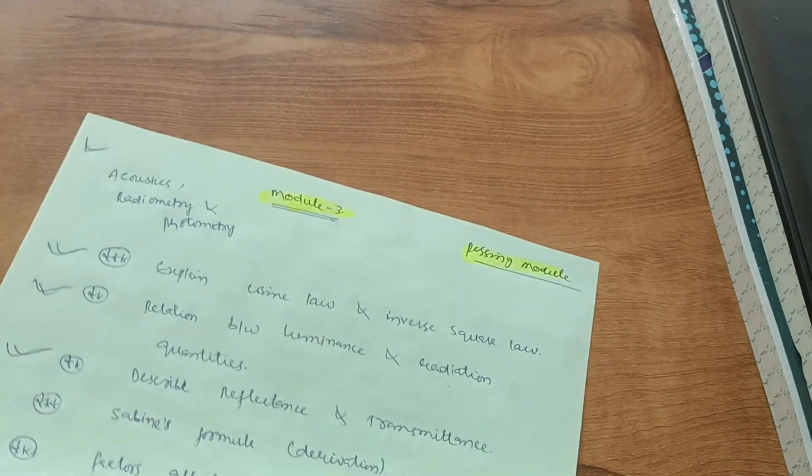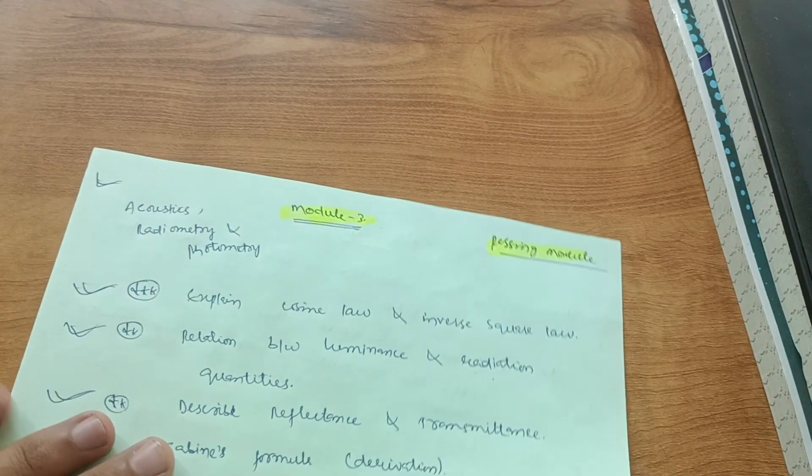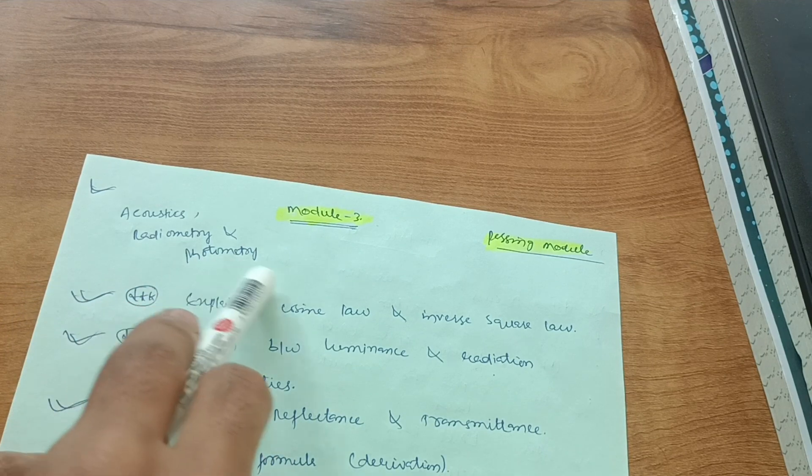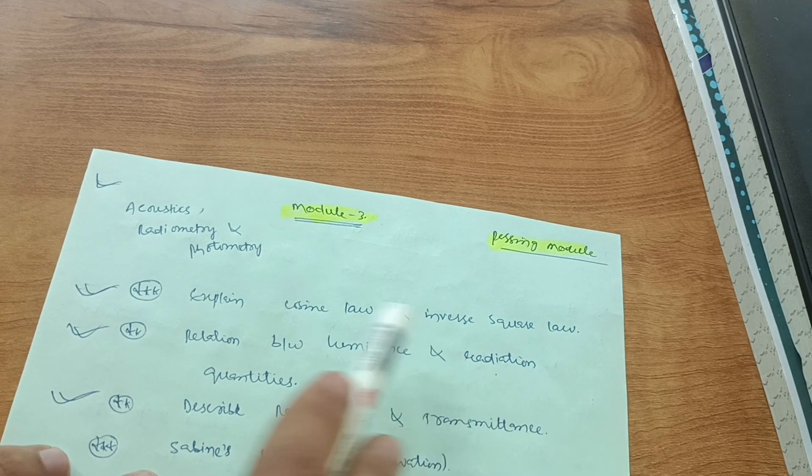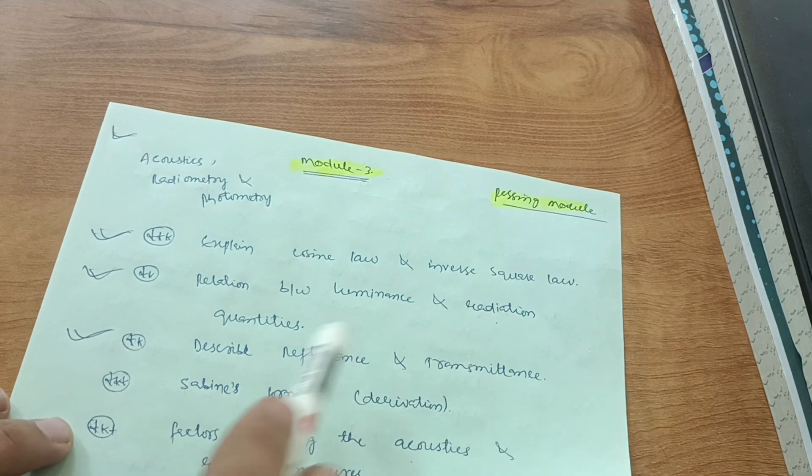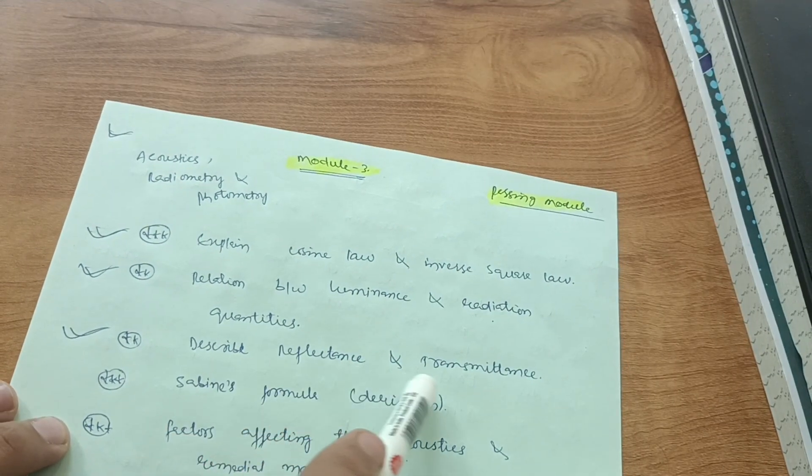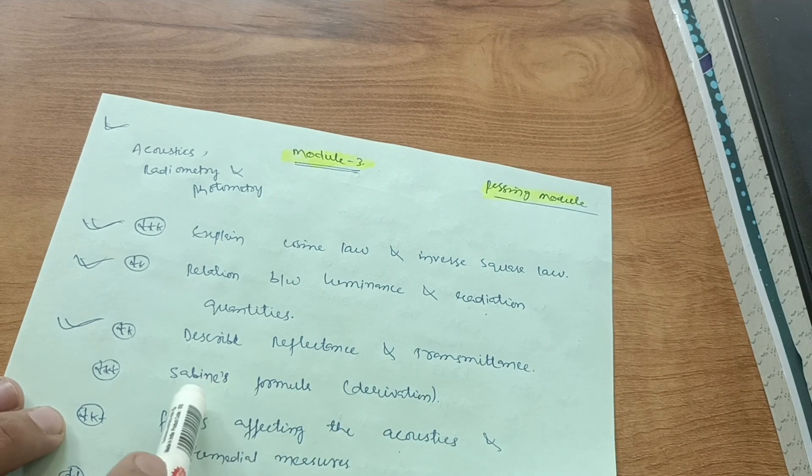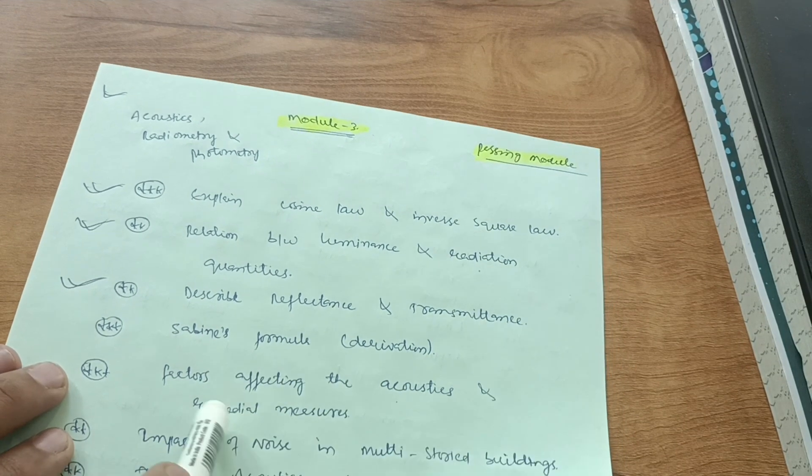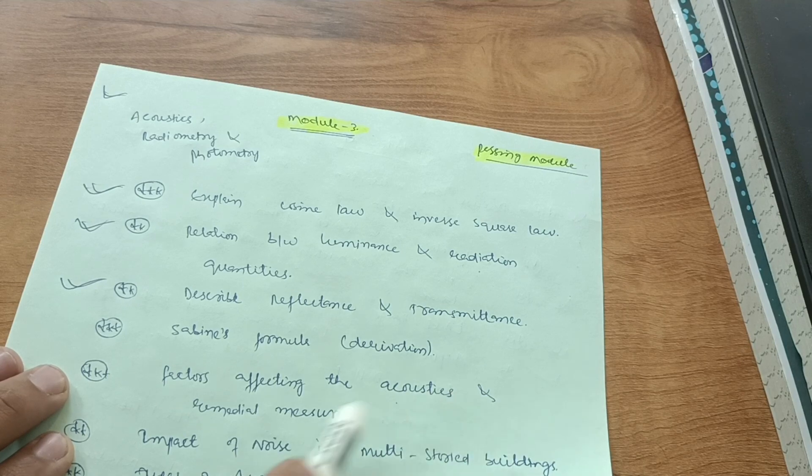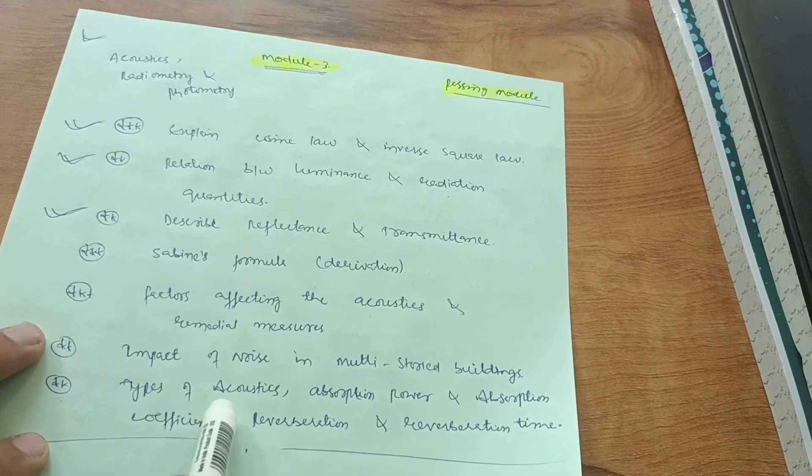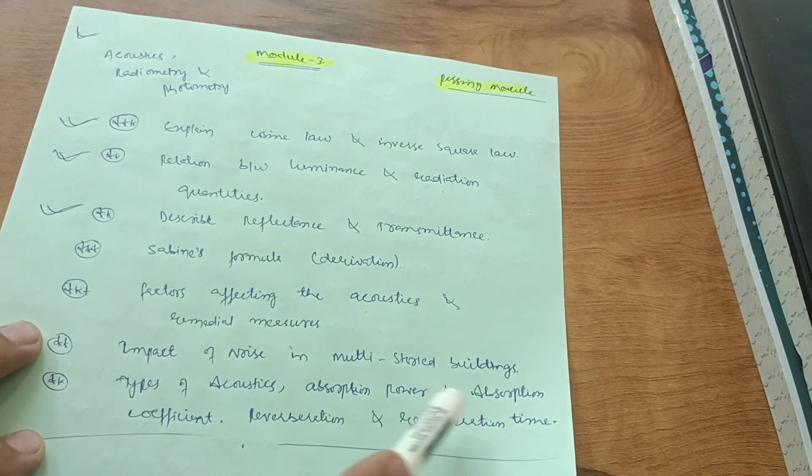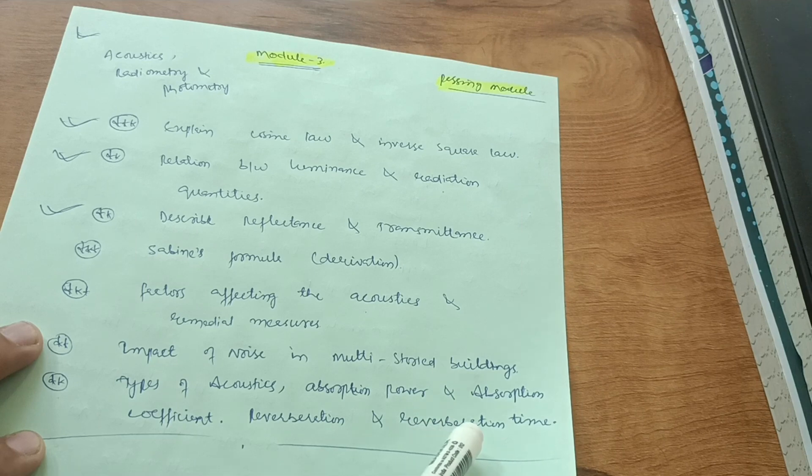Module three comes up which is also a passing module. This is acoustics and radiometry and photometry. Explain cosine law and inverse square law and relationship between luminance and radiation quantities. Describe reflectance and transmittance and Sabine's formula is a derivation you just go through. Factors affecting the acoustics and remedial measures and impact of noise in multi-storied buildings.